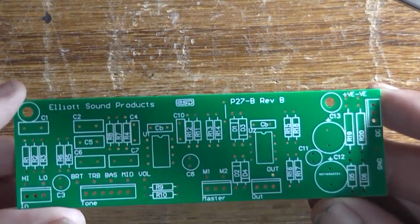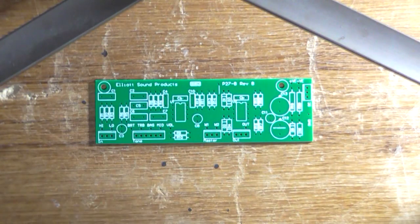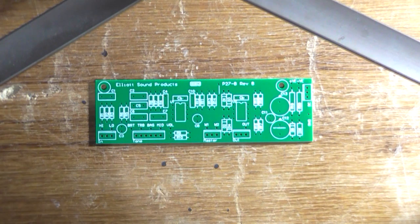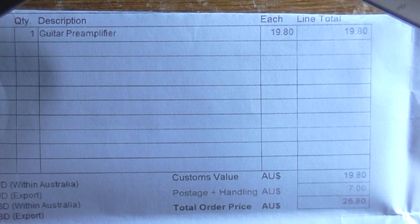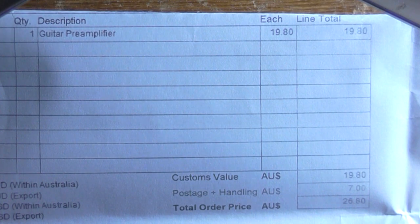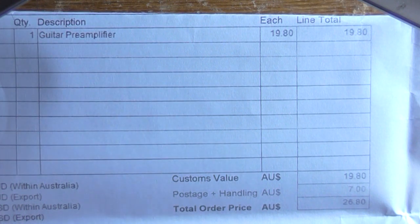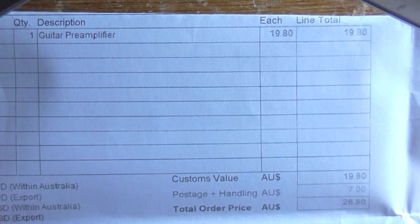You have to follow the instructions on his website. This board cost $19.80, it's just a blank board with no parts, you provide your own, plus $7 postage and handling. There's a copy of the invoice, total was $26.80 which was nice.